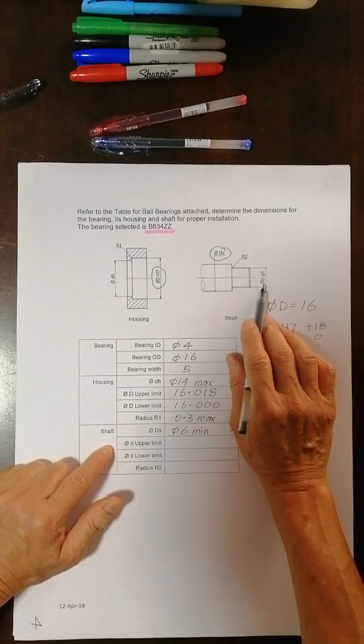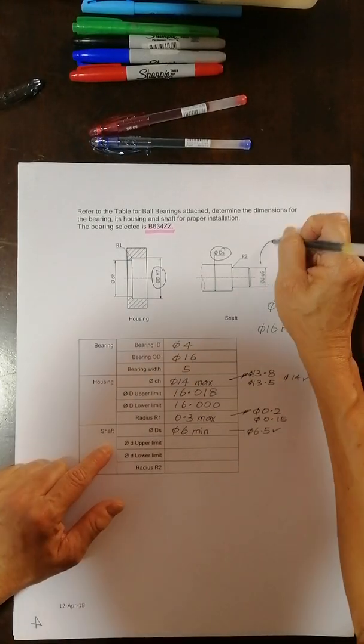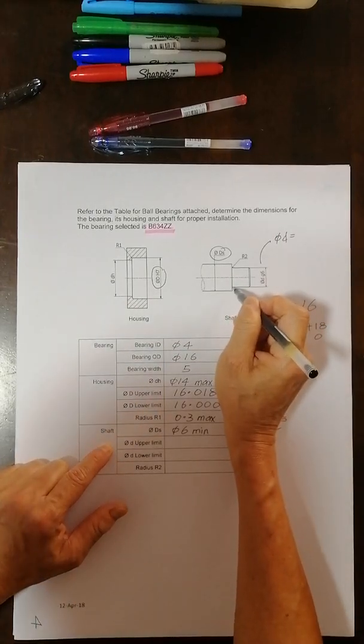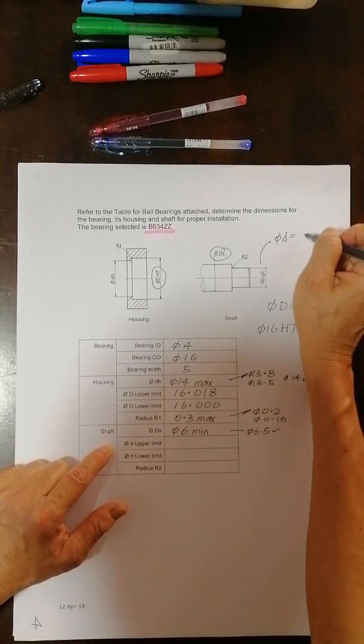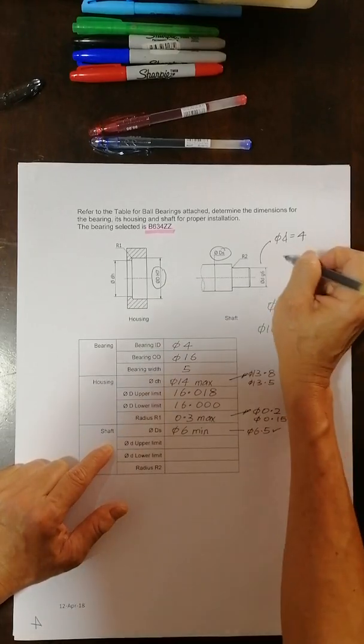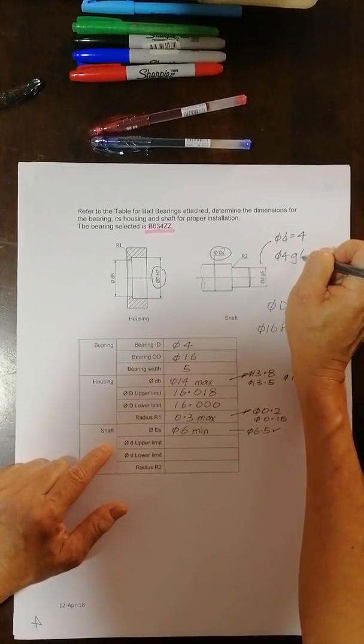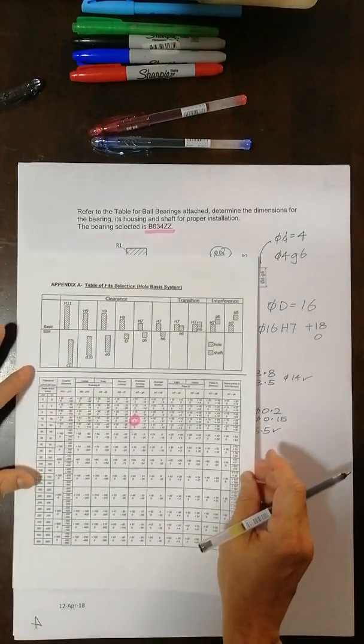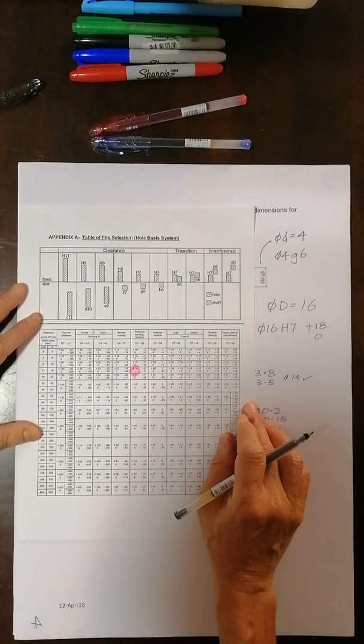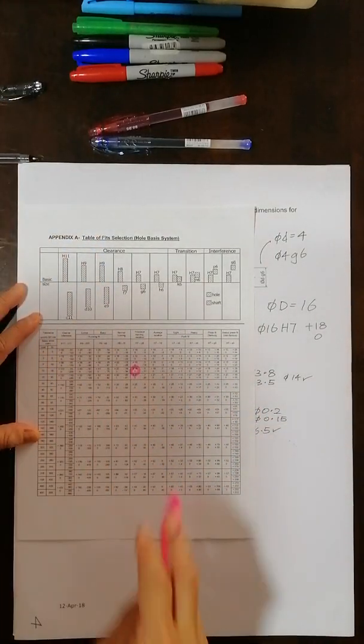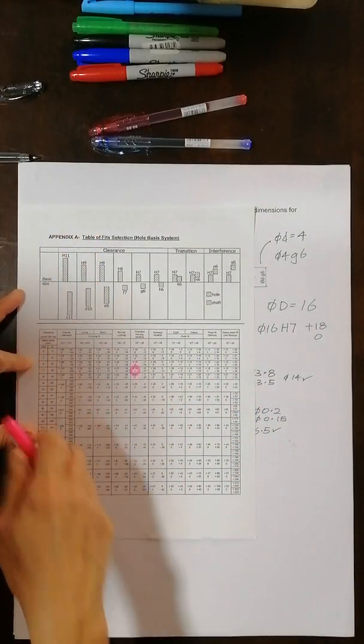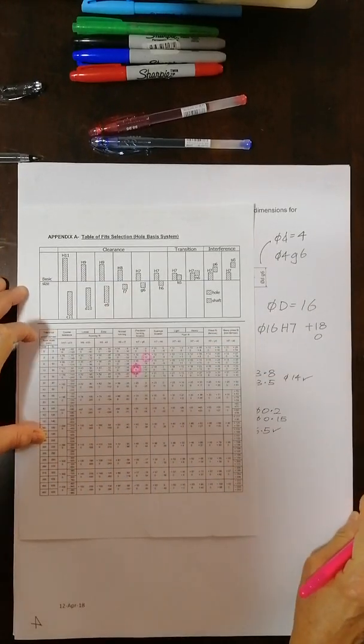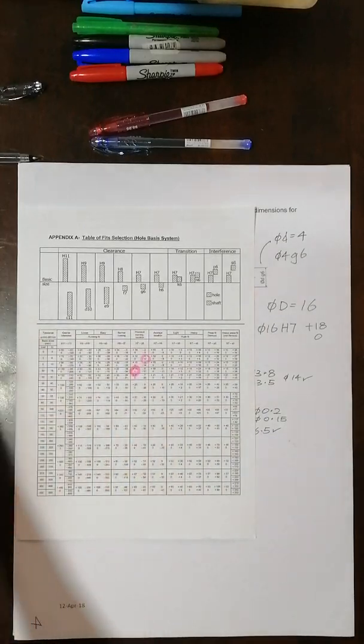And then what about the DH? So now what is small letter D? Diameter D is meant for the bearing to sit. So the bearing is 4. So diameter D is 4. So now what is diameter 4 G6? I need to look back at the fit paper again and look for diameter 4 which is the second row, and G6. I got this number.